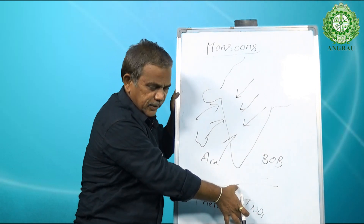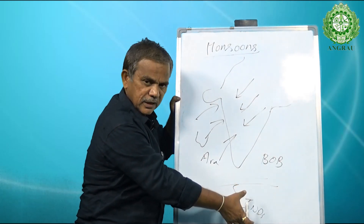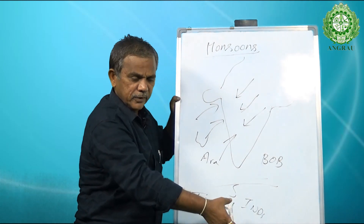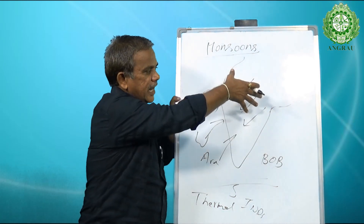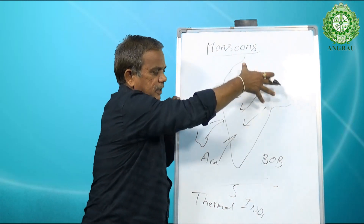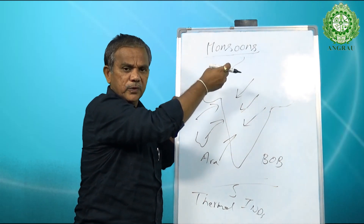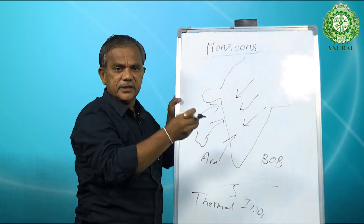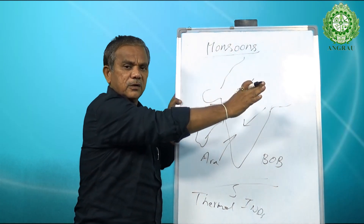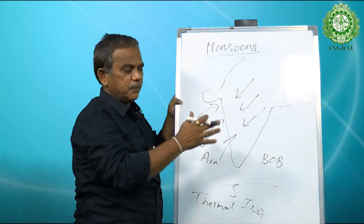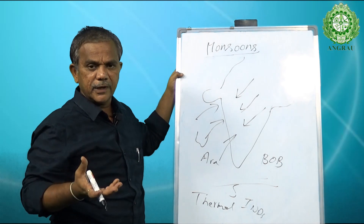After September 21st, in the months of October and November, the entire southern hemisphere gets heated up and low pressure builds over the Indian Ocean. The landmass of Tibet, China, and northern India develops high pressure because the earth's energy has already been emitted or radiated back. The atmospheric pressure close to the earth's surface is around 1,013 millibars normally.